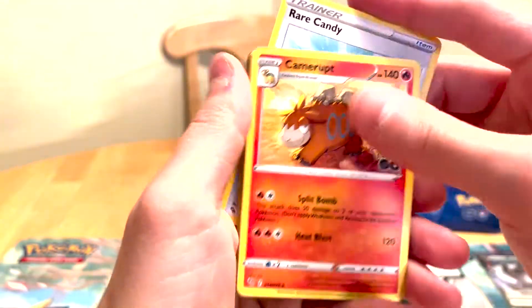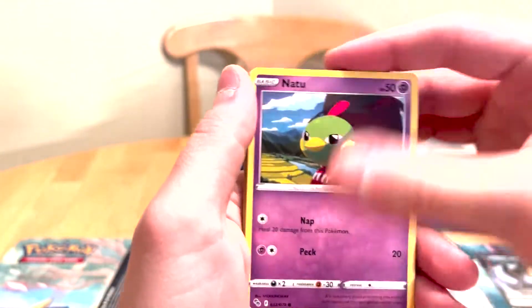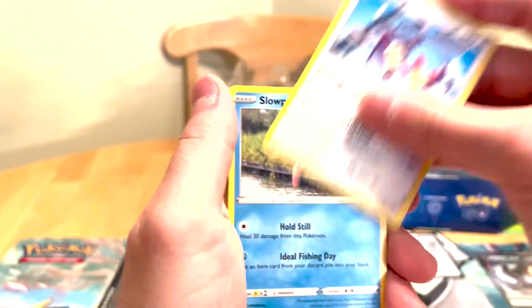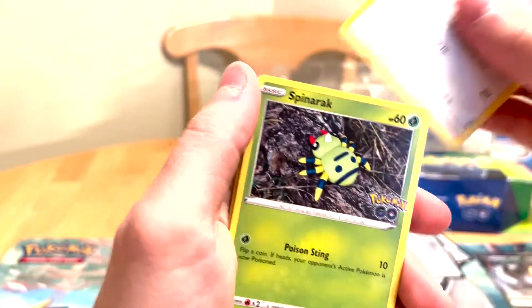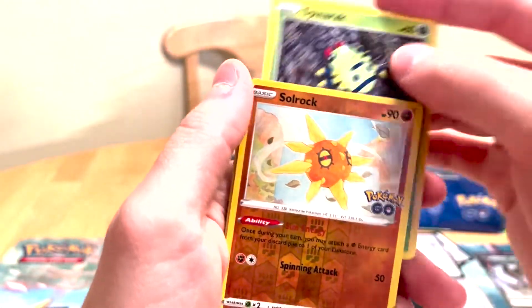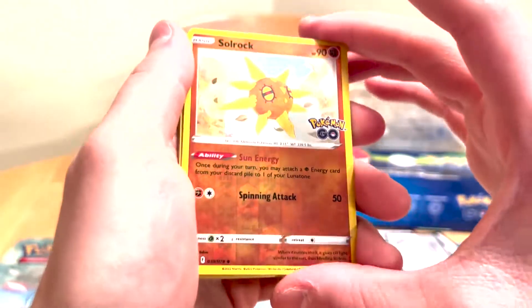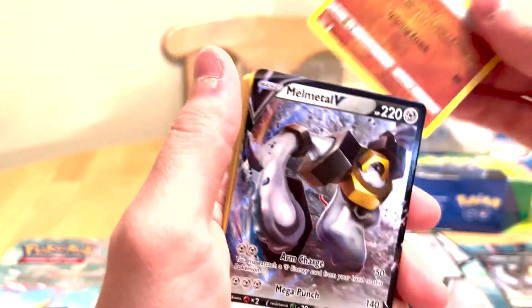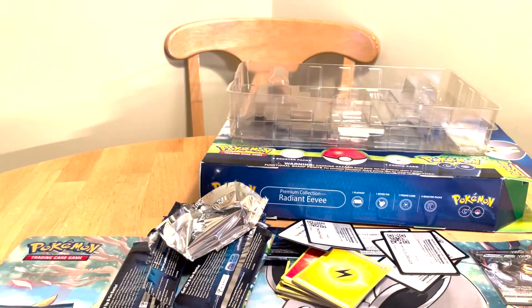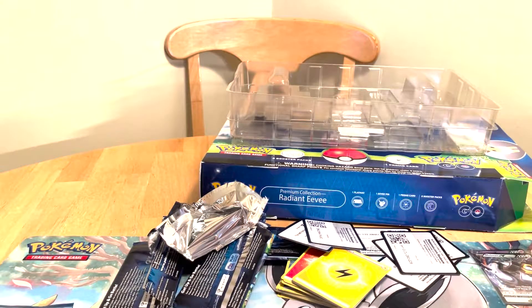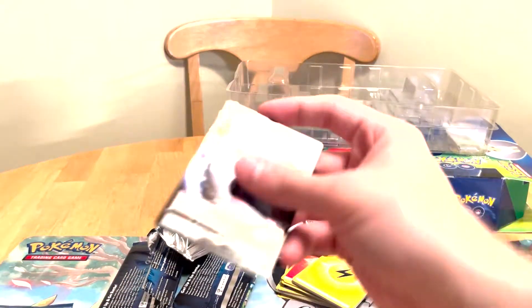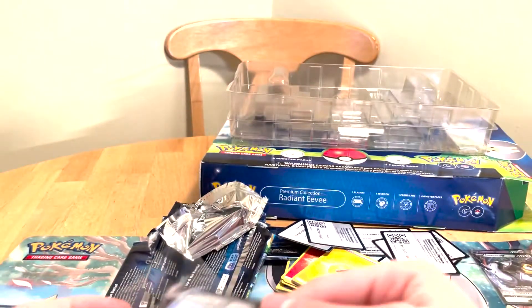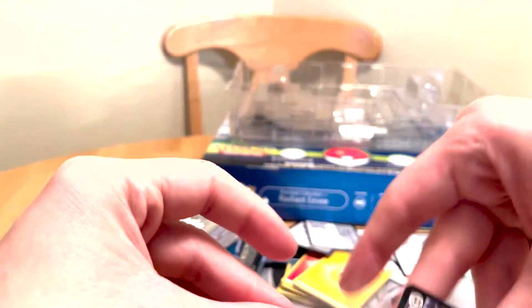And Pheasant, Rare Candy, Camerupt, Natu, Ambipom, Slowpoke, Bibirill, Spinarak. Soul Rock. Cool, because we got Lunatone. Melmetal V again. Okay, we got two of them now. I guess I can use that in a trade if I need to, if someone wants it. Might as well put it in a sleeve. Wow, I totally missed that. That was really bad, Frank. Jeez.